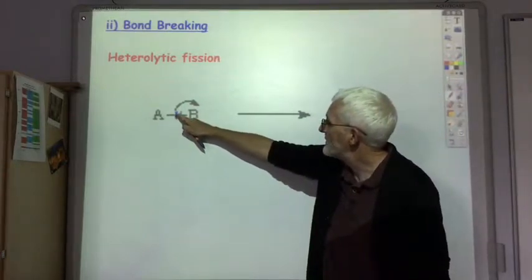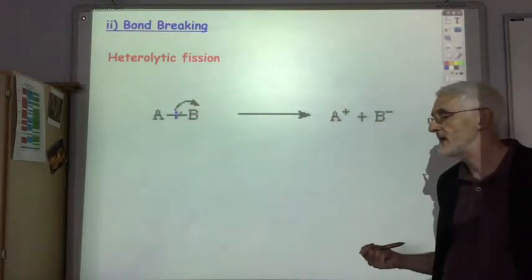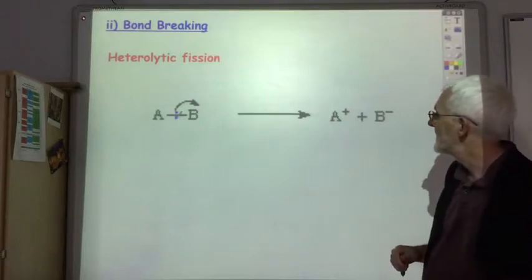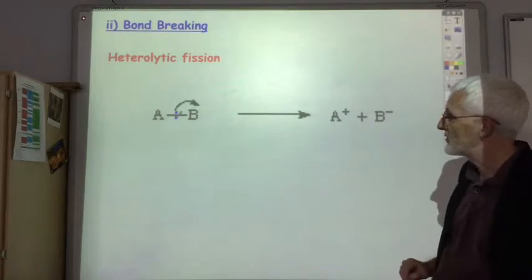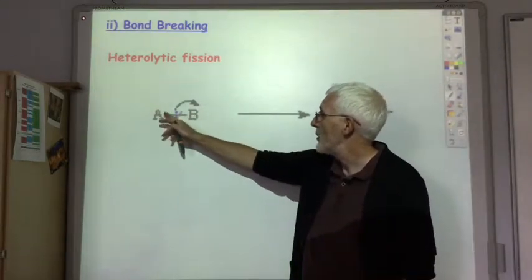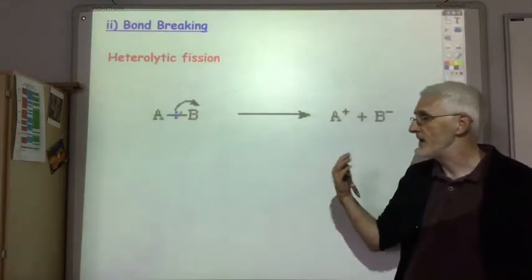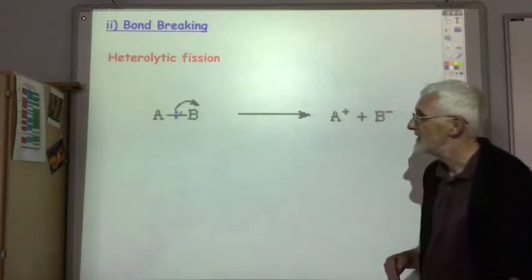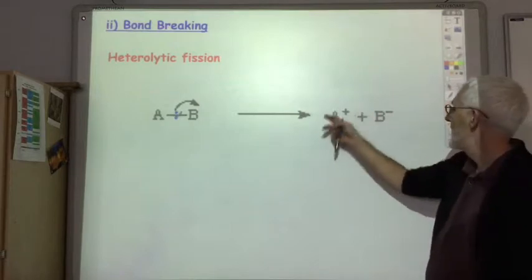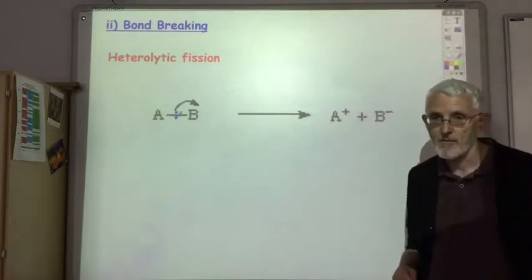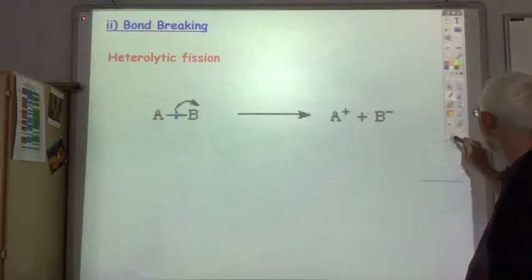both these electrons go on to B which is presumably the most electronegative of the two atoms. So we end up where B has got a negative charge and A has got a positive charge. Remember when this bond was formed one electron was donated by A and one electron was donated by B, but when it split up both the electrons have gone to B. So B ends up with one electron more than it needs so it's got a negative charge and A is left with a positive charge. So that's where bonds normally break up.